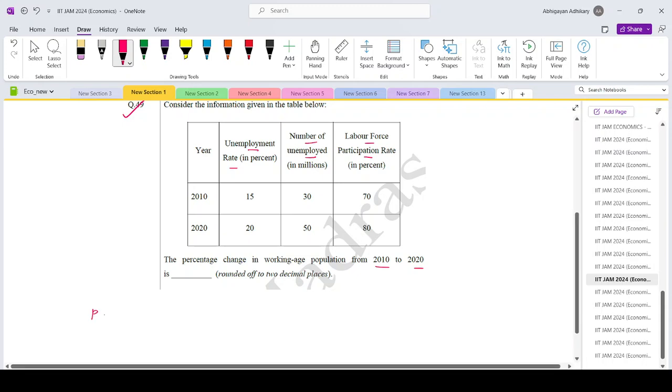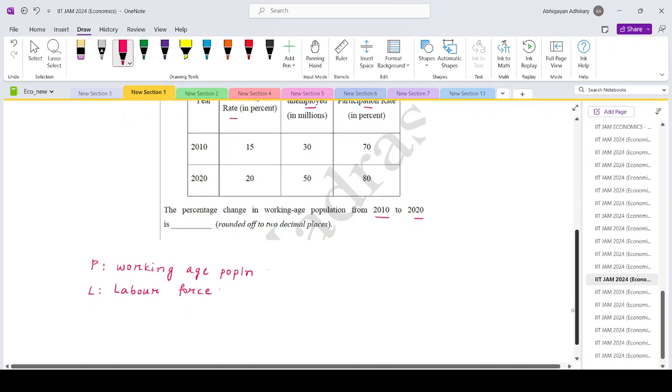Over here, let's say P denotes the total working age population. Capital L denotes that out of the working age population, how much is the labor force, and capital U denotes the unemployed labor.